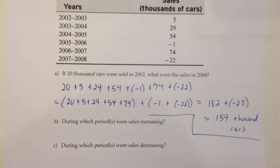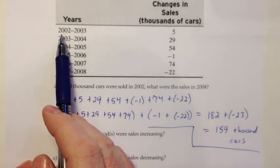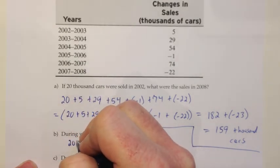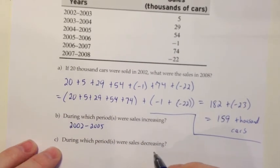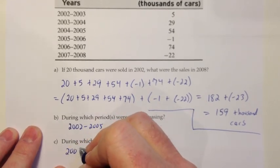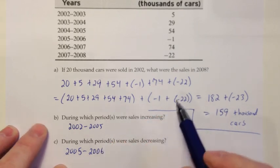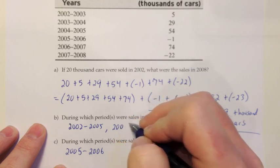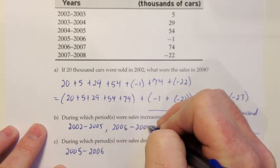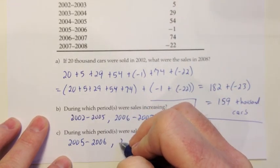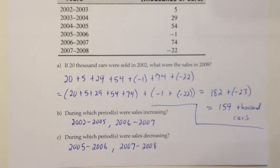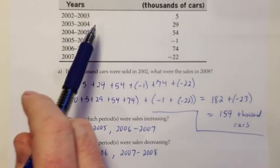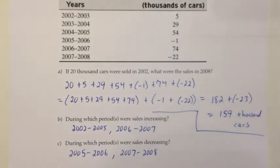Alright, and then during which periods were sales increasing? So any of the times we did positive, we had sales increasing. So it looked like sales were increasing from 2002 all the way to 2005. And then we had a dip from 2005 to 2006. It was a minus 1. So that would be, for this next question down here, the decrease in period. And then we had an increase again from 2006 to 2007. And then we ended up our chart with one more decrease as we went from 2007 to 2008. So all the negatives represent years that were decreasing. All the positives represent years that were increasing. And because we had several years in a row where it was increasing, I just lumped all those together as one time period from 2002 to 2005.